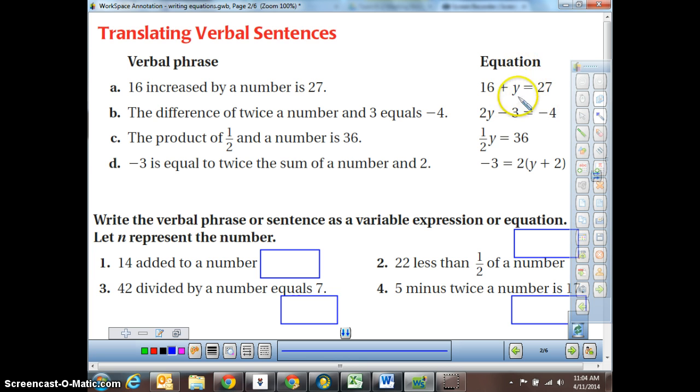Remember that we can use any variable that we want. If you chose to use n here in your head instead, that's totally fine. The difference, difference means subtraction of twice a number and 3. So twice a number is multiplying. Here we have a difference. So we have 2 times a number minus 3 is equal to a negative 4.